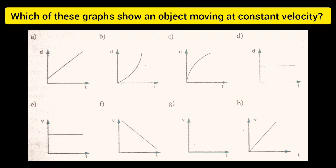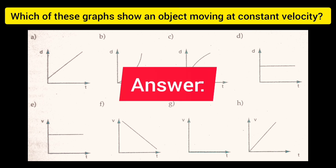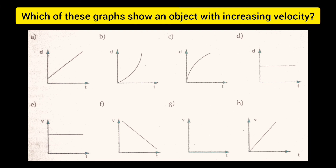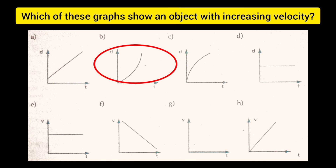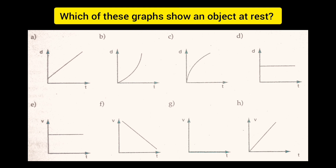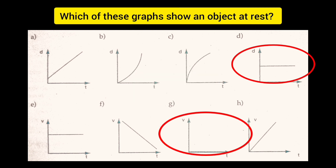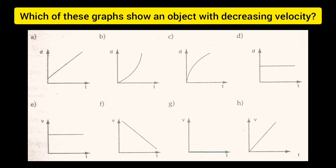Let's review the concepts. Which of these graphs show an object moving at constant velocity? Which of the following shows an object with increasing velocity? Which of these graphs show an object at rest? Which of these graphs show an object with decreasing velocity? Which of these graphs show an object moving at constant velocity?